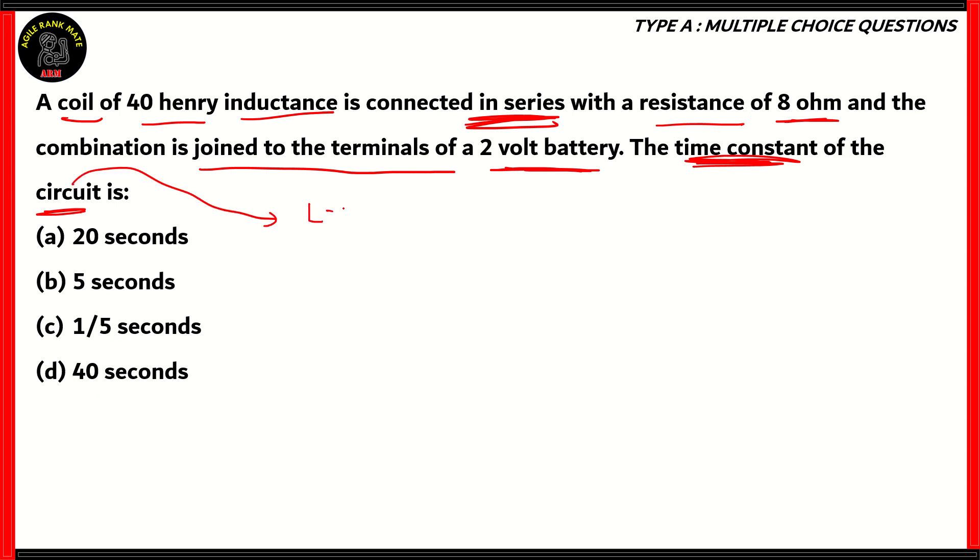Well, the circuit that we're dealing with here is an LR circuit, an inductance resistance circuit. Now, in this circuit, there is this value called the time constant, and the time constant is represented by τ. The value of τ in a series LR circuit is L/R, which is the inductance over the resistance. Now, you'll learn about this in alternating current.